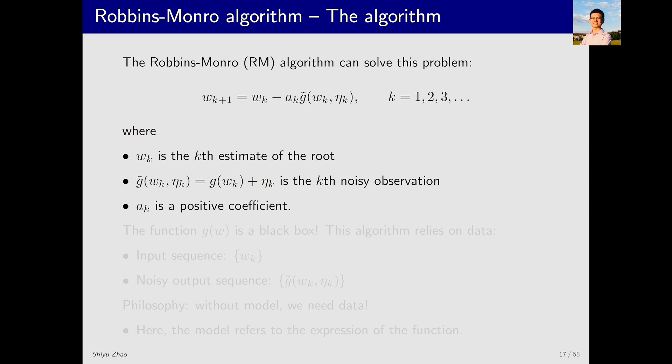Let's now formally introduce the RM algorithm. The RM algorithm is an iterative algorithm. Our goal is to solve g(w) equals zero, and let's assume the optimal solution is w*. In this iterative algorithm, the kth estimate of w* is wk. The next estimate, wk+1, is calculated by combining wk and this term. This term consists of two parts: ak, a coefficient, and a function g tilde. The expression of g tilde is simple. It is g(wk) plus ηk where ηk is noise.